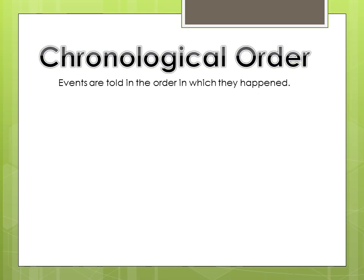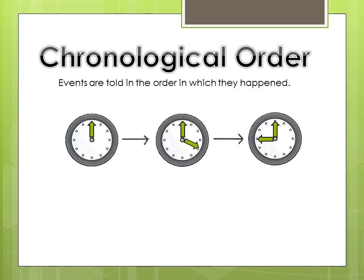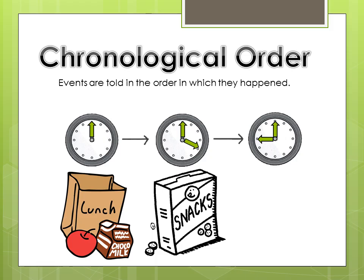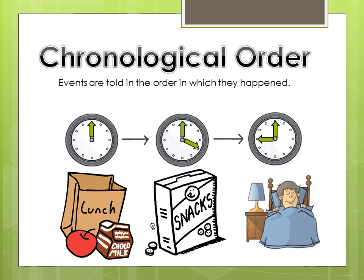Events are told in the order in which they happened in chronological order. So, for example, today at noon you had lunch. Then, at 4pm, you arrived home and had a snack. And finally, at 9pm, you ate dinner and went to bed.